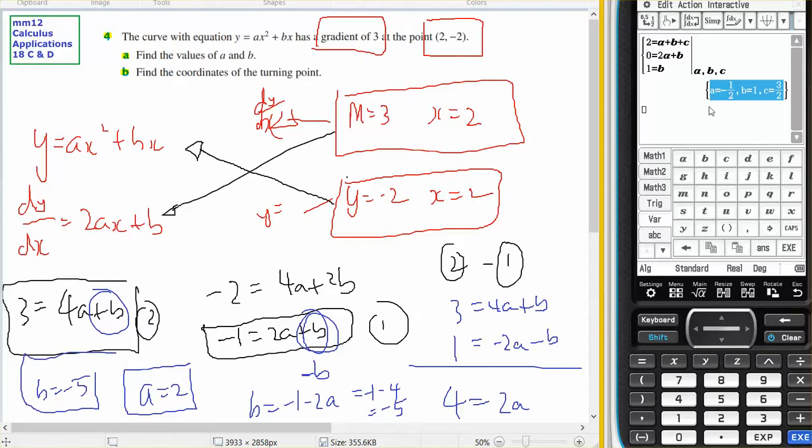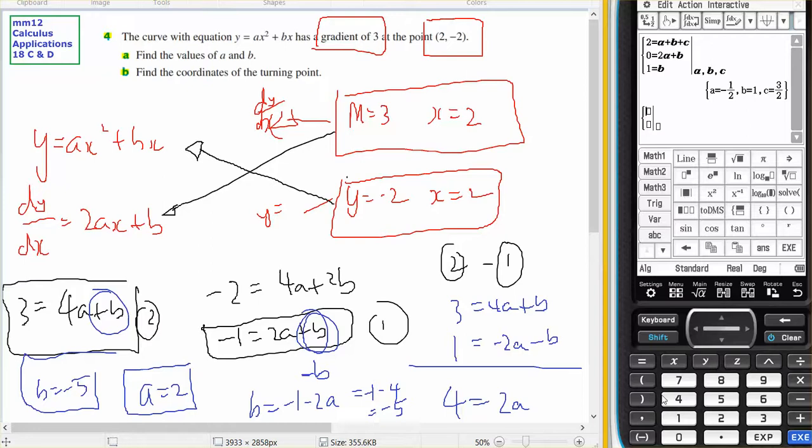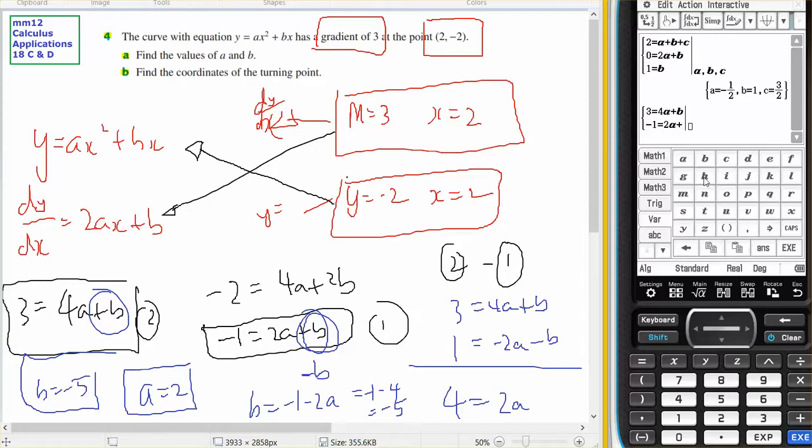I'll just double-check that over here on my calculator. I've got 3 equals 4A plus B, and I have negative 1 equals 2A plus B. And I'm solving that for A and B, and I get the same answers.